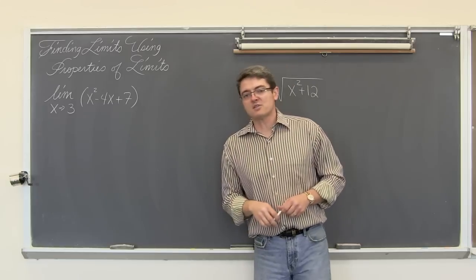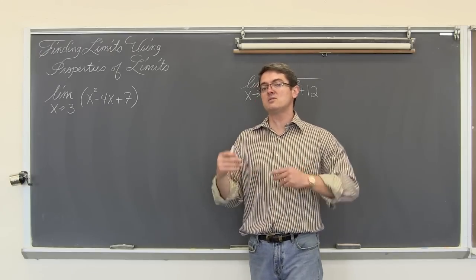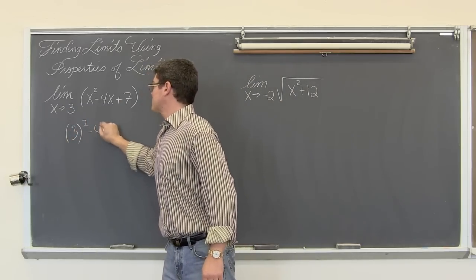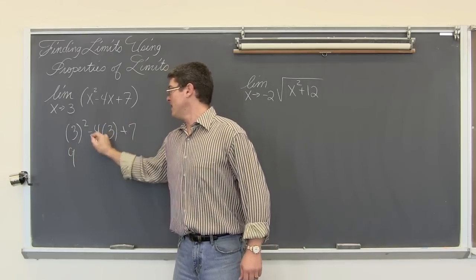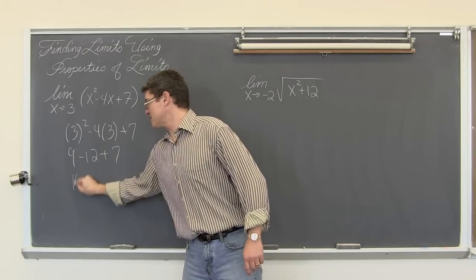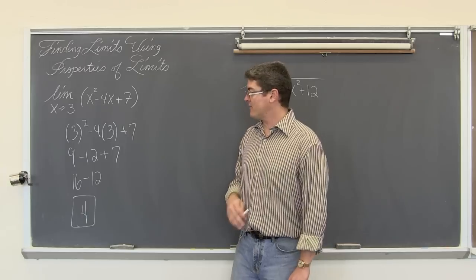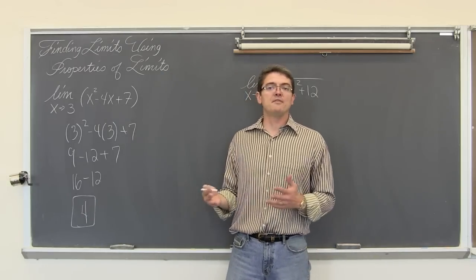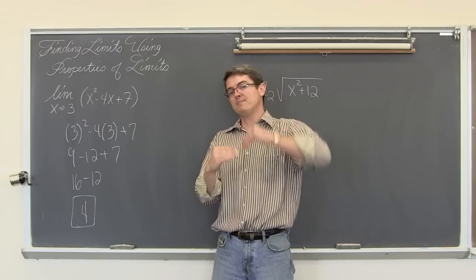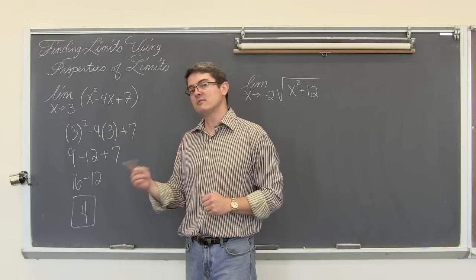The limit as x approaches 3 of x squared minus 4x plus 7. This is a polynomial, so all we need to do is take the value of a and plug it into the function. We have 3 squared minus 4 times 3 plus 7. 3 squared is 9, negative 4 times 3 is negative 12, plus 7. 9 and 7 make 16, and 16 minus 12 is equal to 4. The graph will approach the y-value of 4 from both the left of 3 and the right of 3.